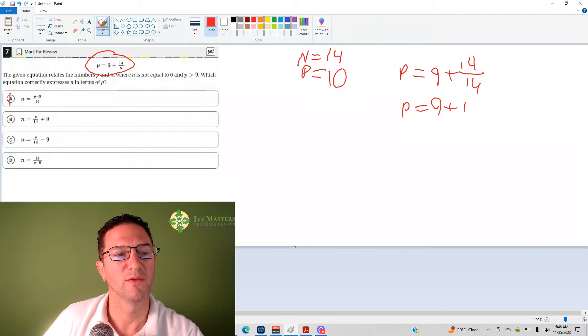Answer choice B, if I plug 10 in for p, I get 10 over 14, which reduces to 5 over 7 plus 9, that's 9 and 5 sevenths, it's not 14, I need 14 for my n.